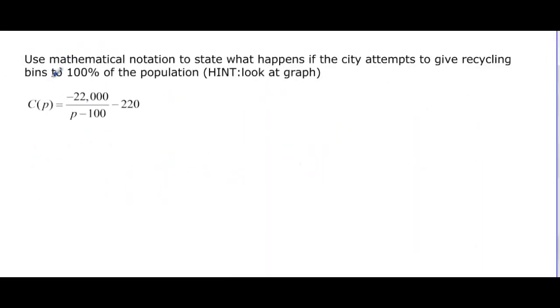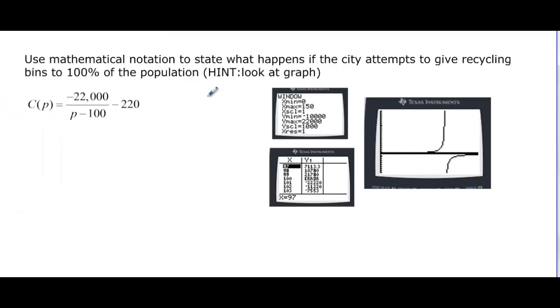And we want to do the same situation, but now we want to know what happens if the city tries to give the recycling bins to 100 percent of the population. And it says hint, take a look, and I actually took the time to make some screenshots of those. So here's our graph, and we can see our asymptotes here are at the x-axis, and then this one we would have to figure out what that was. But we can figure out what that is by looking at our table here. Because you see the error here, that's going to be my vertical asymptote. At 100, we have an error.